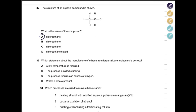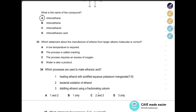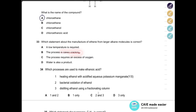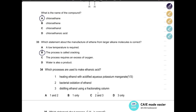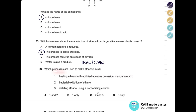Which statement about the manufacture of ethene from a larger alkane molecule is correct? A larger alkane is broken down to give ethene — that's obviously cracking. Does it work at low temperature? No. Does this process require oxygen? No. Is water a product? No — the only products are alkanes or alkenes.